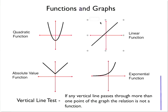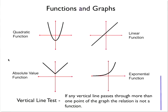Linear functions are in the shape of a straight line. Most commonly we see those in y equals mx plus b form. Absolute value functions are some of the easier ones to recognize because absolute value is in the shape of a V, and the absolute value has a V in its name.